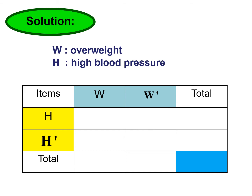From the question, the total number of people is 100. 30 professors out of 100 were found to be overweight, so the column total for W is 30. 10 out of them had high blood pressure, so the W intersect H cell is 10. For the first column total of 30, the remaining W intersect H prime is 20. When we subtract, the total for not overweight is 70.